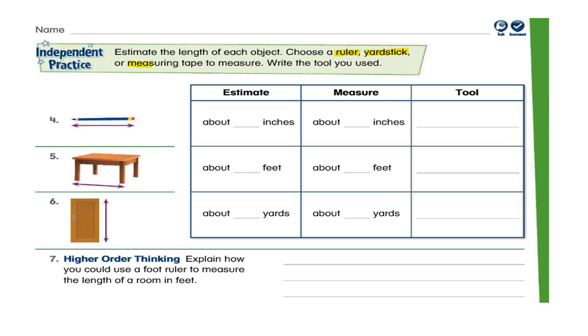Then, the measuring tape. The measuring tape, again, you can use to measure the inches and the feet and also the yards. But sometimes, the measuring tape is short for bigger objects like to measure your room, like to measure your door, your windows. It is short.